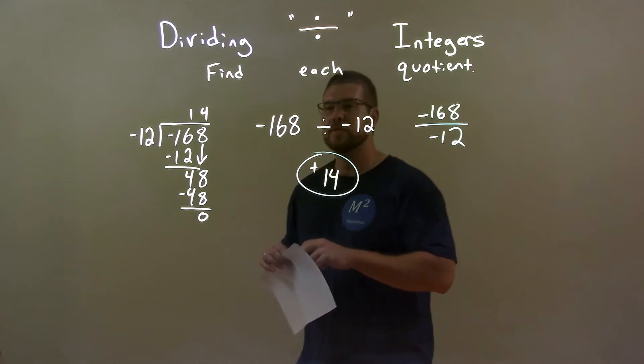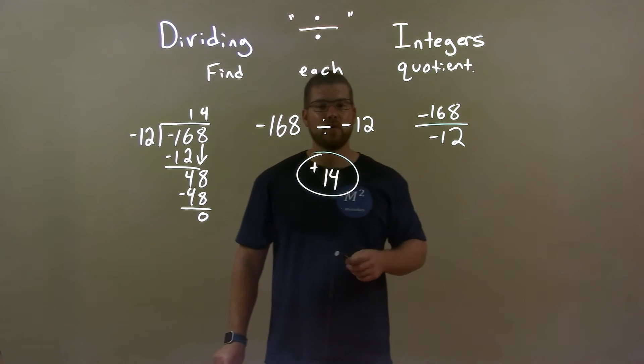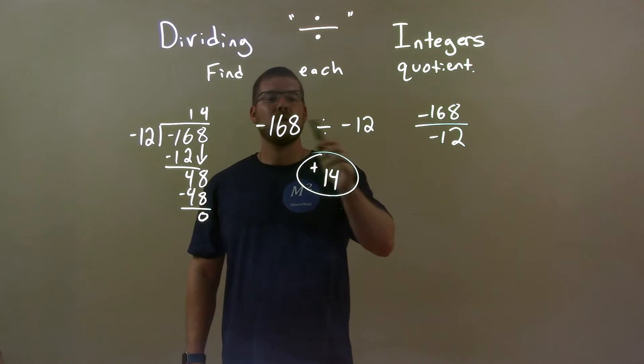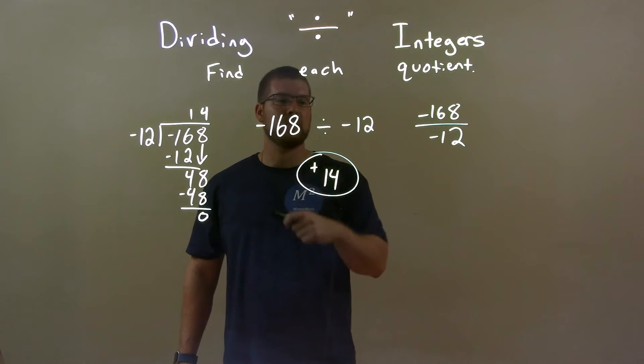So quick recap, we're given negative 168 divided by negative 12. We know that 12 goes into 168 fourteen times, and we have two negatives here. So a negative divided by a negative is a positive. So our final answer is positive 14.